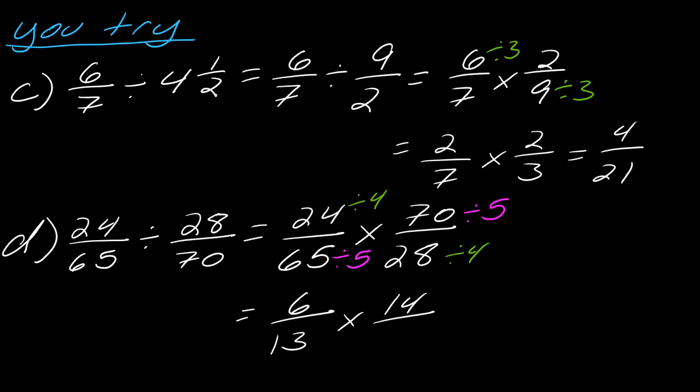So, now, looking through all of this, there's nothing else that I can cancel out. So, I'm just going to multiply straight across. 6 times 14 is 84. And, 13 times 7 is 91. So, there we are. We're done.